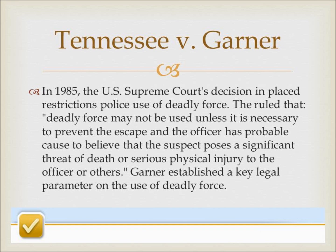The Garner case involved a Memphis police officer who shot and killed an unarmed 15-year-old fleeing the scene of a burglary. The officer spotted the child climbing a chain-link fence, called out to stop, and when he did not, shot him in the back of the head. Although it was dark, the officer admitted no reason to believe the juvenile was armed or dangerous, explaining he fired because the defendant would have escaped and likely not been apprehended. The officer's actions were thought justifiable under an existing state flee-and-felon statute.